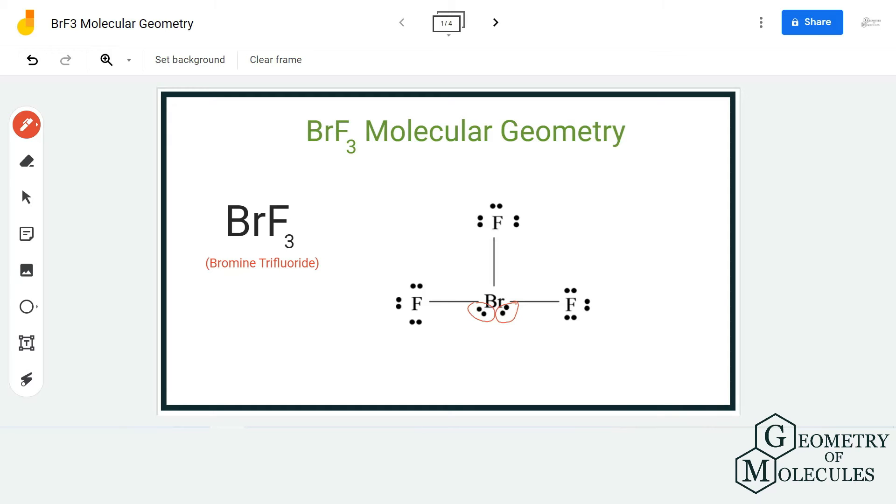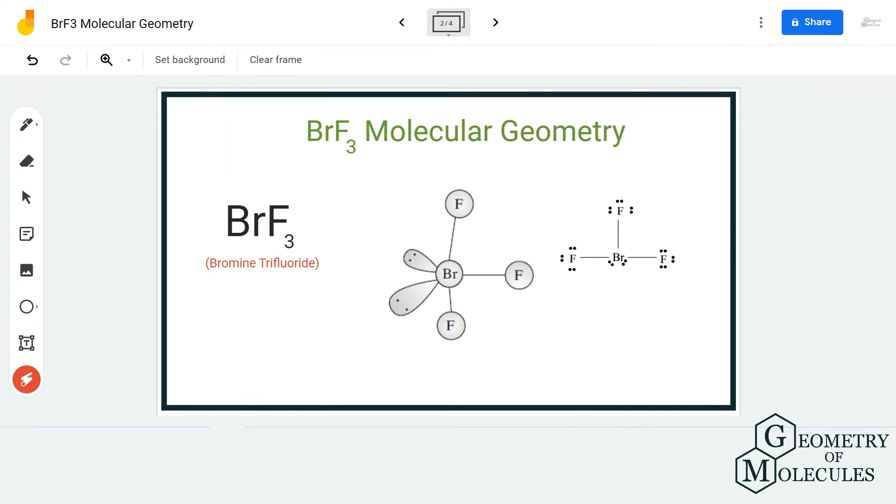Once you know that, we can look at the shape of the BrF3 molecule. Here you can see that even though there are two lone pairs of electrons present on this molecule, the shape is like a T. So it is a T-shaped molecule because of these two lone pairs.